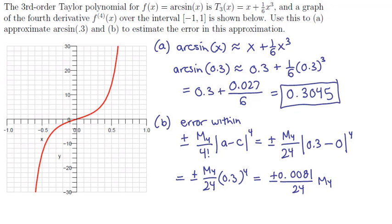Now we've got to work out what M4 is. Remember that M4 is the maximum value of the fourth derivative of the arcsin function on the interval from the center 0 to the point 0.3 that we're approximating at.